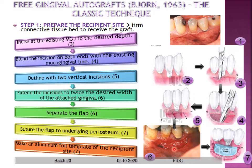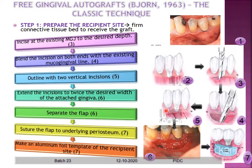The steps begin with preparing the recipient site. Here you can see a clinical picture showing very little attached gingiva in the area, with the aim of increasing its width. We start by incising at the mucogingival junction to the desired depth, then blend the incision on both sides with the existing mucogingival line. Outline the area with two vertical incisions confined to that particular area and extend the incision to twice the desired width of attached gingiva. If I want two mm of width increase, I need to prepare four mm of recipient site.